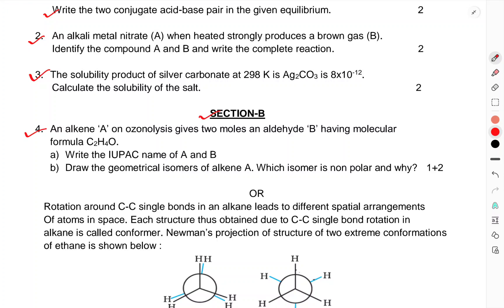Section B: An alkene A on ozonolysis gives 2 moles of aldehyde B having molecular formula C2H4O. Write the IUPAC name of A and B.